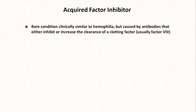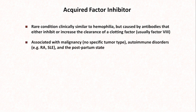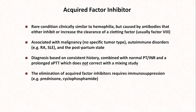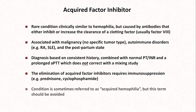The next condition is an acquired factor inhibitor. This is clinically similar to hemophilia, but is caused by antibodies that either inhibit or increase the clearance of a clotting factor, usually factor VIII. This is a rare condition associated with malignancy, autoimmune disorders, and the postpartum state. Diagnosis is based on a consistent history combined with normal PT-INR and a prolonged PTT which does not correct with a mixing study. The elimination of acquired factor inhibitors requires immunosuppression, such as prednisone or cyclophosphamide.